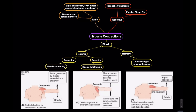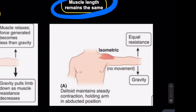Then you have the isometric contraction, where the muscle length stays the same. One example is if you lift your arm and keep it in equal resistance to gravity — you still have some contraction in the muscle fibers, but the actual length of the muscle fibers is not changing. That's an example of an isometric contraction. Another example is if you got in the push-up position and didn't move up or down, but just stayed in the push-up position — that's also an isometric contraction.